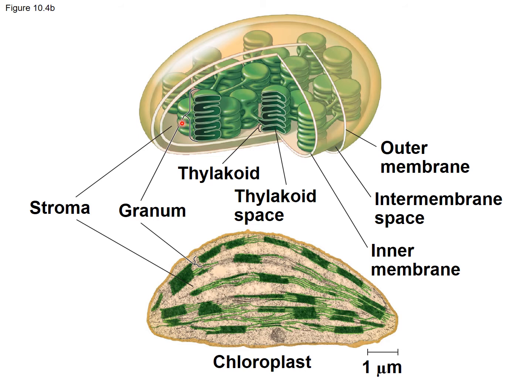Inside the chloroplast are stacks of thylakoids. Individual flattened sacs are called thylakoids, and a stack is called a granum. A transmission electron micrograph shows these stacks connected to one another. Each thylakoid has a thylakoid membrane, and inside is the thylakoid space. These structures — the thylakoid membrane, thylakoid space, and stroma — will be very important when we discuss the details of photosynthesis.